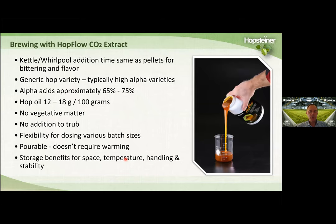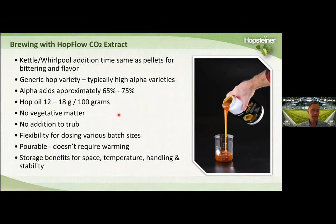Another new product we've recently introduced is Hop Flow. This is CO2 hop extract from which we've removed most of the beta acids. Beta acids have a very high melting point, which is why CO2 hop extract is very thick and usually solid at room temperature. By removing the beta acids, we can make a very flowable hop extract. It's used the same way as CO2 hop extract, made from high alpha acid varieties, with alpha concentration of about 65 to 75% and oil content of about 12 to 18 grams per 100 grams. No vegetative matter, no trub addition, and it allows flexible dosing — use a partial container or the whole thing. It's very stable, takes up less space, and is very easy to use.